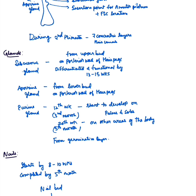Sebaceous glands form from the upper bud on the posterior wall of the hair peg. They become completely differentiated and functional by 13 to 15 weeks. However, the size decreases after birth and they enlarge again at puberty, since sebaceous glands are under the control of androgens.